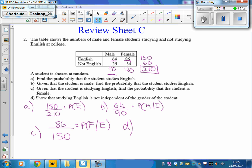Part D. Show that studying English is not independent of the gender of the student. If it was independent, then the probability of studying English given that they were male should be equal to the probability of studying English. It shouldn't matter whether they were male or female.